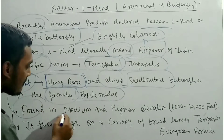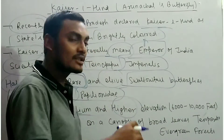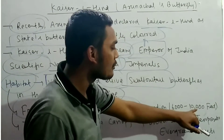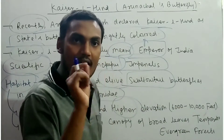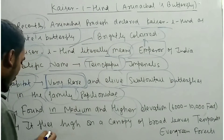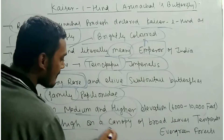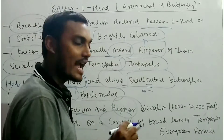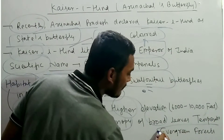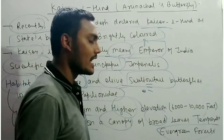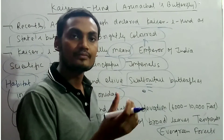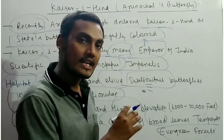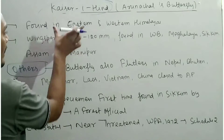It is found in medium and higher elevations, specifically in the Himalayan ranges, at an elevation range of 6,000 up to 10,000 feet. It flies high in the canopy — the broad leaf cover — and is associated with temperate evergreen forests, which are characterized by high rainfall and trees like oak and pine.